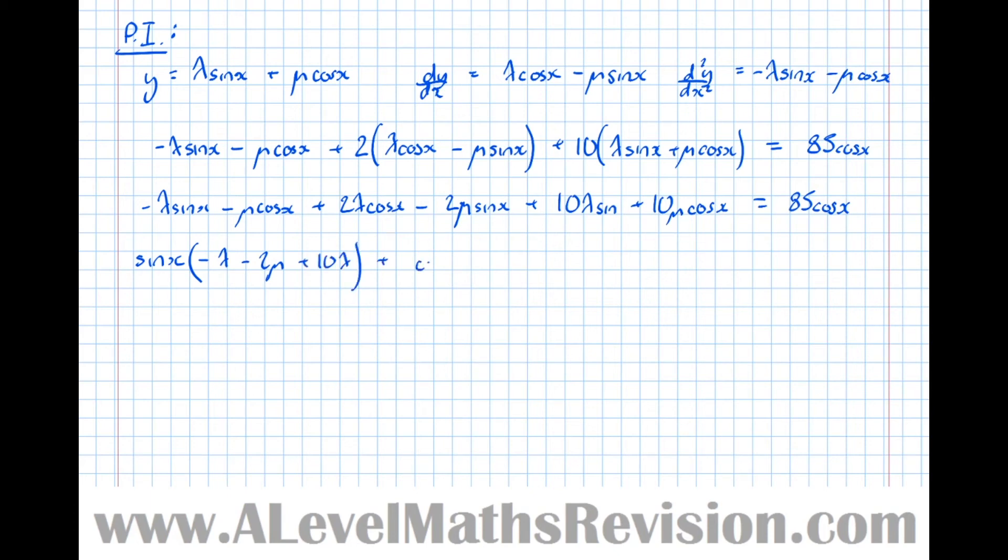And then the cos x's, the coefficient of those are minus mu plus 2 lambda. And then we've got plus 10 mu equals 85 cos x. And just one last simplification.